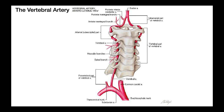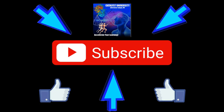So hopefully you understand three major functions of the vertebral artery. Number one, the left and right vertebral arteries fuse to form the basilar artery, which we'll talk about in a later video as partially forming the circle of Willis. It also gives off muscular branches to some deep neck muscles, and it gives off the anterior and posterior spinal arteries. Please make sure to like this video and subscribe to my channel for future videos and notifications. Thank you.